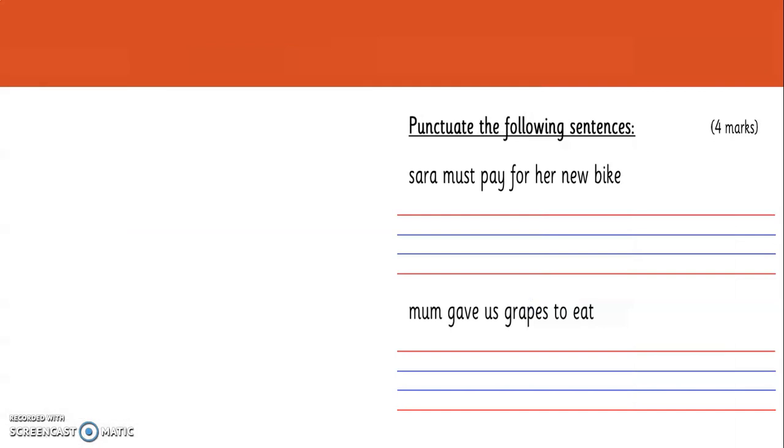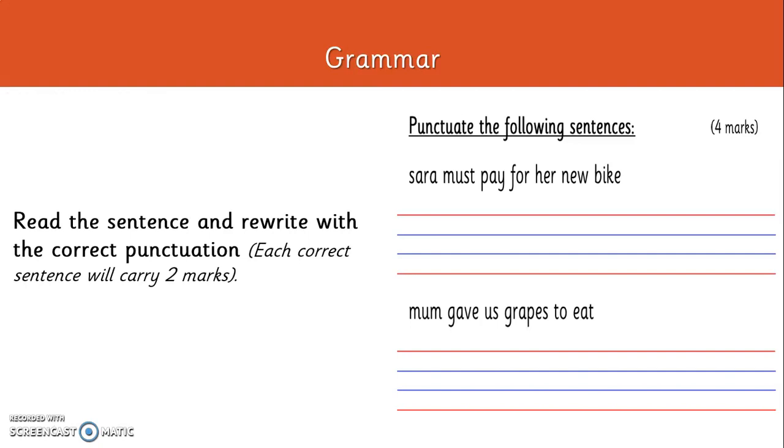Here, again, it's grammar. You have to punctuate the following sentences. There are two sentences without any correct punctuation. So you have to give them or write them with the correct punctuation. For example, the sentence begins with the capital letter and then one finger gap and then full stop. At the end, you have to give a full stop. So for each correct sentence, you will get two marks.